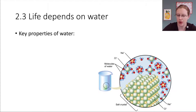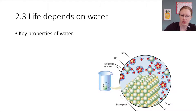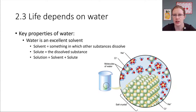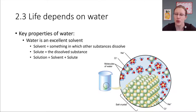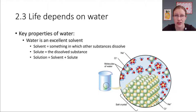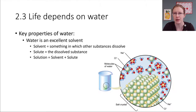The first property we're going to bring up is the fact that water is a very good solvent — it's really good at dissolving other things. At first it might not make sense why that's important for life. As we go forward in the course, we'll see that there are a lot of chemical reactions that have to take place inside a living body just to maintain homeostasis, and it turns out that water provides the medium for those chemical reactions to take place in.